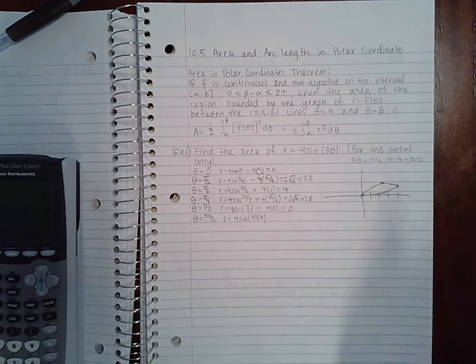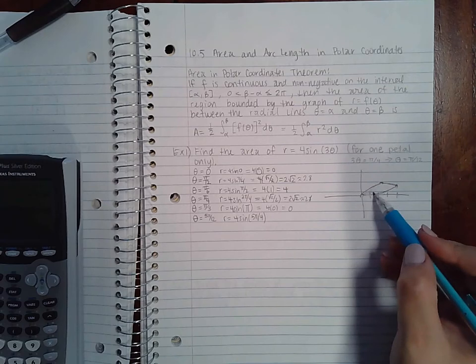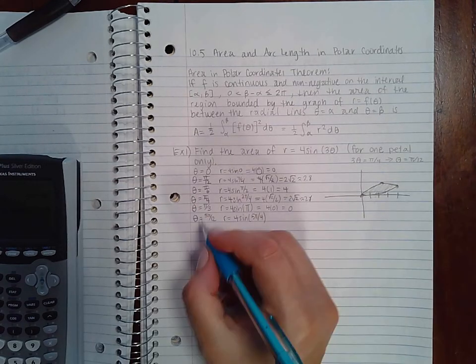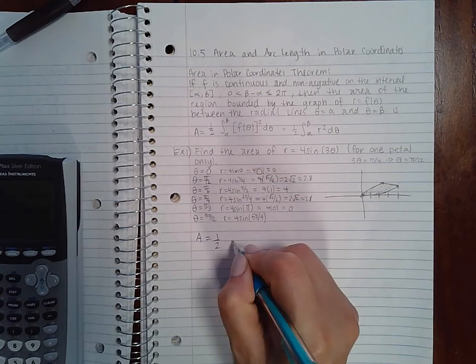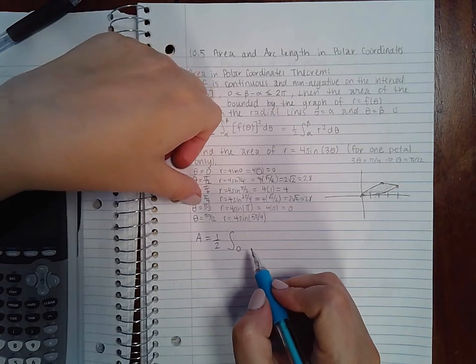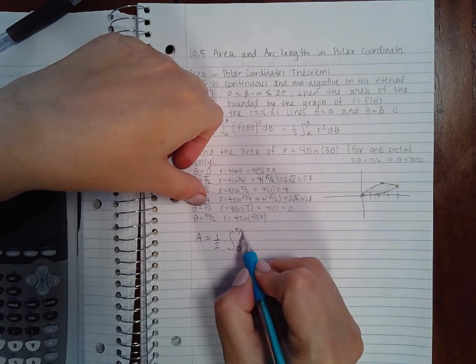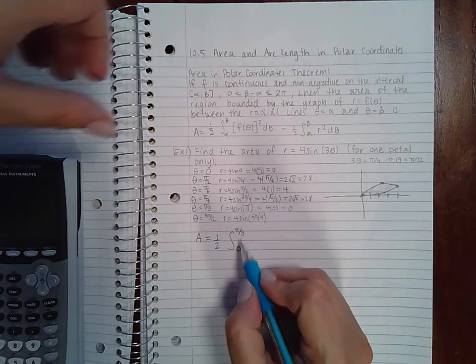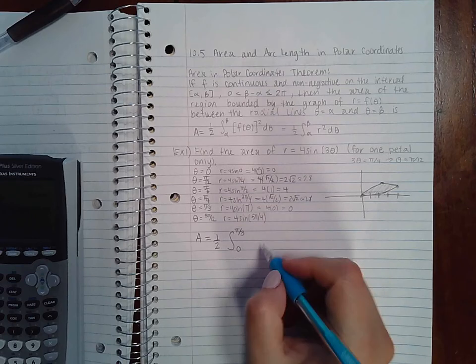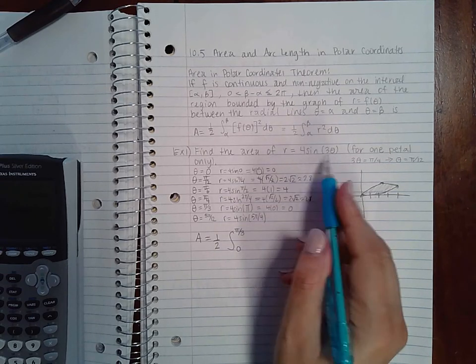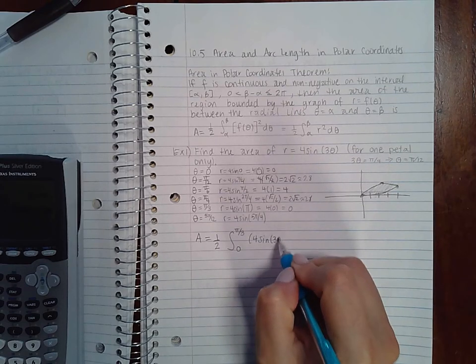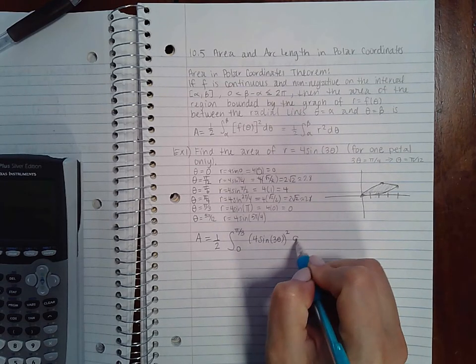If I keep going I'm just going to get another petal somewhere else on the graph. I want to find the area inside this petal, so I'm going to use the formula that we have. Which is one half from α to β, so where I started which was zero and where I stopped which was π/3 - and if I take the difference between these two that is between zero and π/2 - and then my radius squared. My radius is this here so 4 sin(3θ) squared dθ.